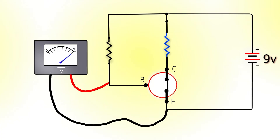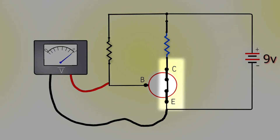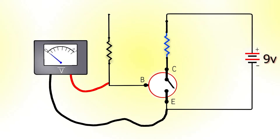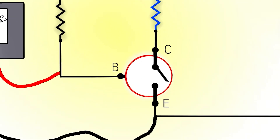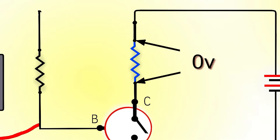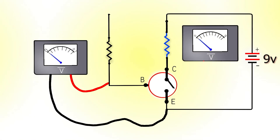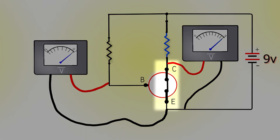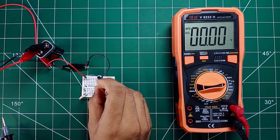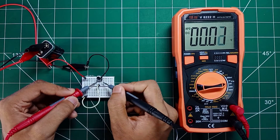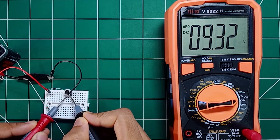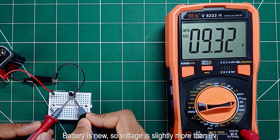Now, what will be the voltage at the collector point with respect to emitter when the transistor is at closed or open position? At open position, since no current is flowing, there is no voltage drop across the collector resistor — therefore the whole supplied voltage appears across collector and emitter. But when base voltage is given, the collector point is shorted to the emitter, and that's why voltage across collector and emitter at closed position is 0V. So remember: closed means 0V and open means the supplied voltage. If 9V is given, 9V will appear across collector and emitter.